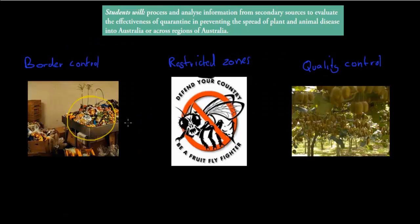We talked earlier about some of the methods to make sure that stuff doesn't enter Australia which is not meant to enter Australia. For example, we've got order control, where we make sure that different types of plant products and animal products don't enter Australia. We've got these restricted zones, especially with the Queensland fruit fly - it's infected Queensland, but we want to make sure it doesn't enter South Australia, so we have these restricted zones.